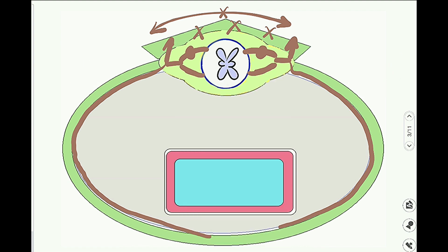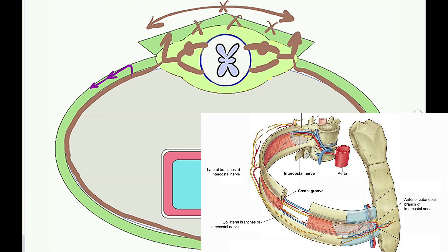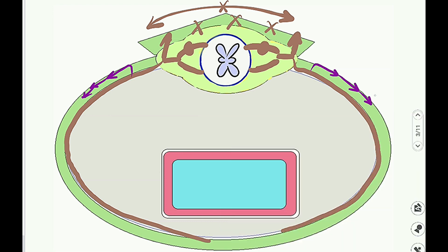For a nerve to be typical, it must supply only the thorax through the intercostal space. The ventral ramus has important branches. The first is the collateral branch, which runs in the lower part of the intercostal space — the ventral ramus runs in the upper part and the collateral branch in the lower part, supplying the skeletal muscles of the intercostal space. The other two are cutaneous branches: the lateral cutaneous nerve, emerging at the lateral side of the body wall, and the anterior cutaneous nerve, emerging at the anterior aspect.